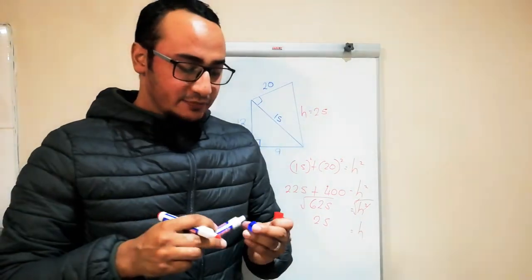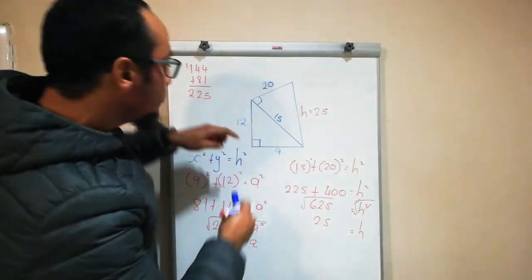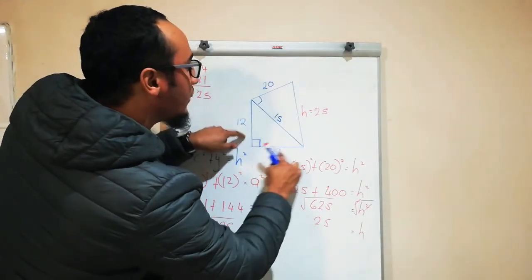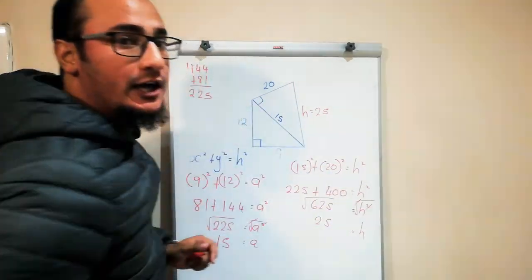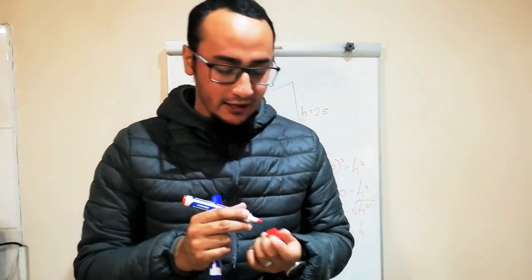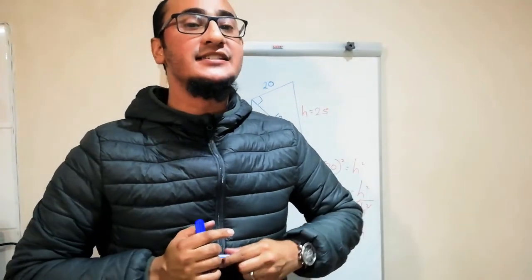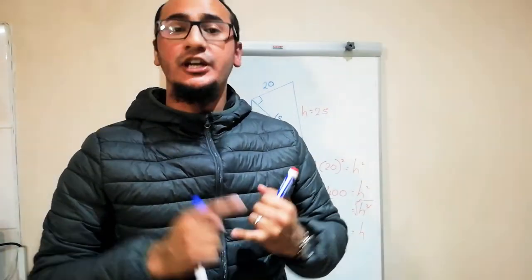So in a nutshell, what does Pythagoras mean? It means the two shorter sides squared would be equal to the longest side, which is my hypotenuse. With that being said, lesson number one is done.